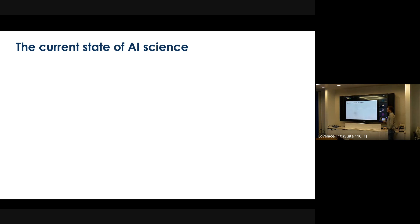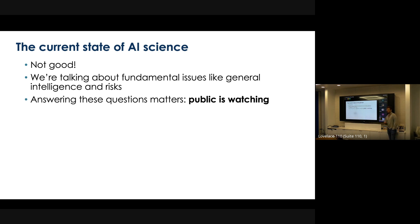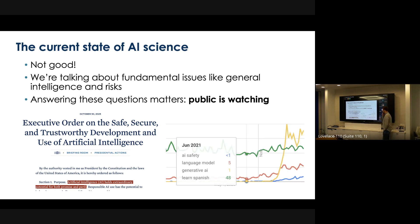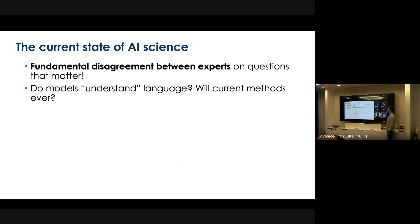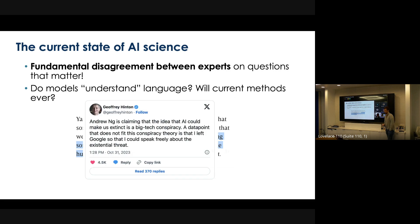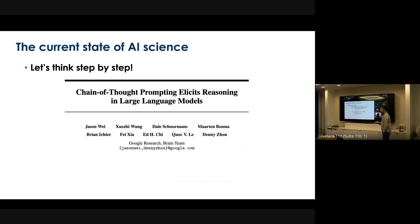I think there are a lot of problems right now with the state of AI science. We have these fundamental issues that are being talked about in public. The public is listening when we talk about general intelligence and risks, and it's having impacts on policy and general interest. Generative AI has become a more popular search term on Google Trends than 'learn Spanish' in the last year and a half. And there are fundamental disagreements between experts on these really important questions — do models understand language? We have Jan LeCun versus Jeff Hinton, Emily Bender versus the sparks of AGI people. How do we resolve these questions?